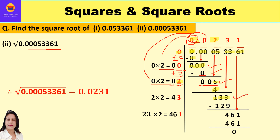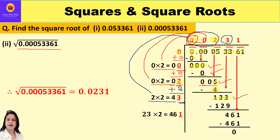Bring down the next period 33, giving a dividend of 133. The current quotient is 002, which is 2; doubling gives 4. Leave a blank. We try digits: 42 × 2 = 84, and 43 × 3 = 129, which is very close to 133. So divisor is 43, quotient digit is 3, and 43 × 3 = 129. The difference is 4.